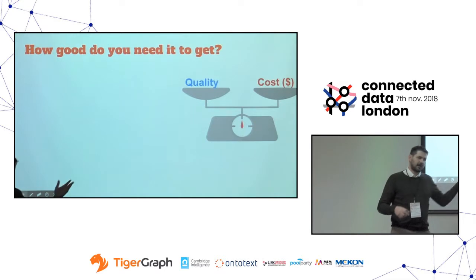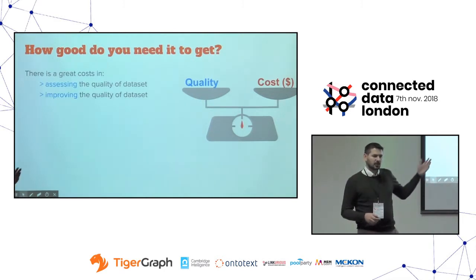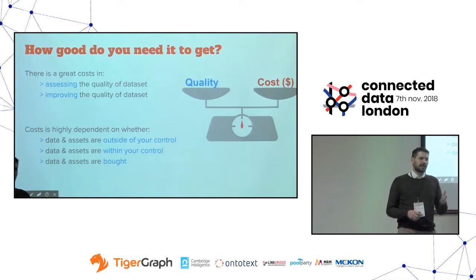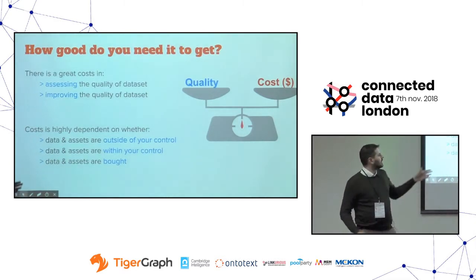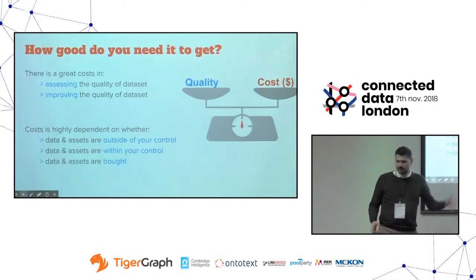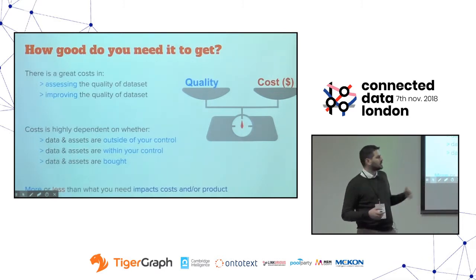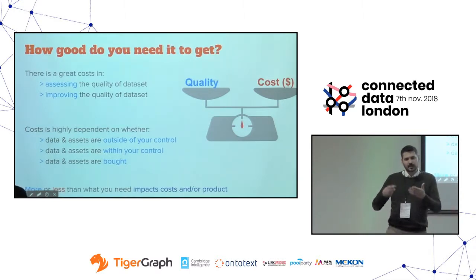After defining metrics, you need to see how much quality you actually need. There are significant costs involved in assessing quality and improving it. These costs depend on whether the data are within your control, outside your control, or if you bought the data. If it's outside your control, you can assess but not easily improve. You need to find the right balance — too much quality costs money, too little impacts your products and consumers.